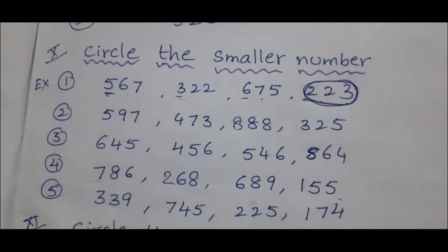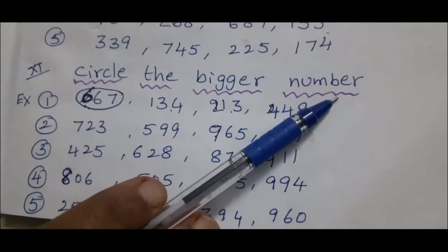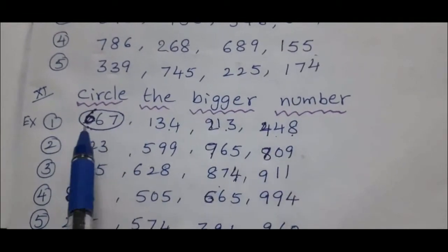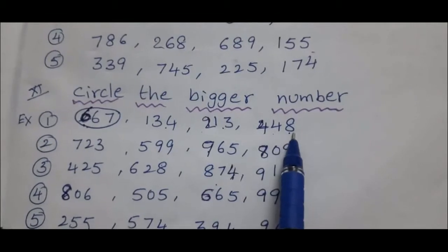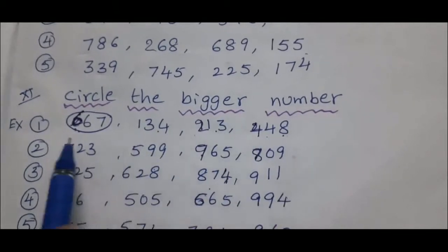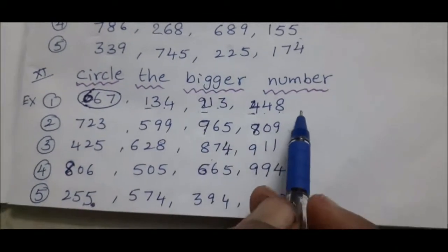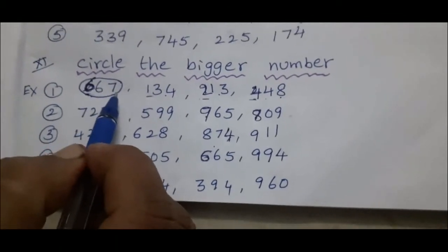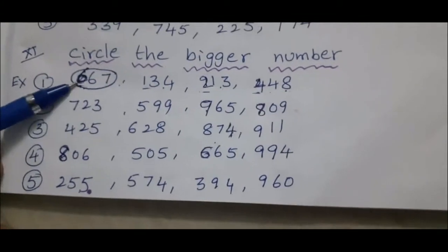Next topic: circle the bigger number. Here also, first we compare digits — these are all 3-digit numbers. Example: 667, 134, 213, 448. Which number has the biggest hundreds digit? Here: 6, 1, 2, 4. 6 is the biggest, so 667 is the bigger number. Remaining problems, follow the above example.